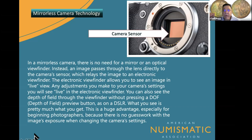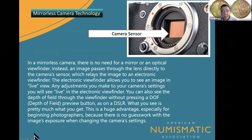The image passes through the lens and directly onto the camera sensor, which relays the image to an electronic viewfinder. The electronic viewfinder allows you to see the image in live view — you can check your depth of field, just like with a DSLR camera. You're getting a much more accurate picture with the mirrorless. It is the future.